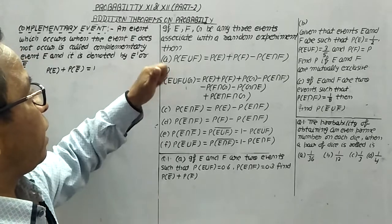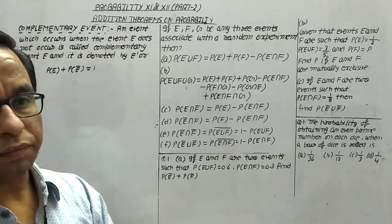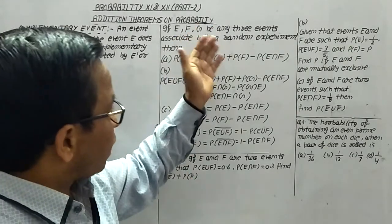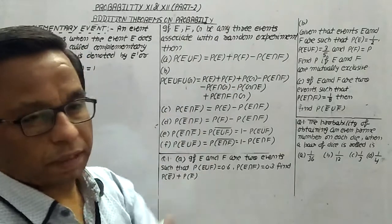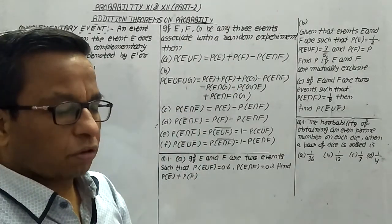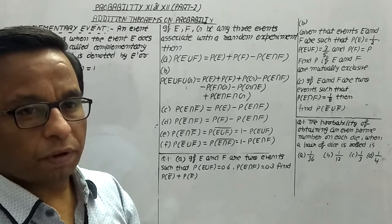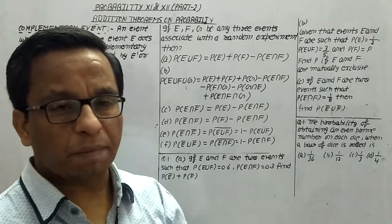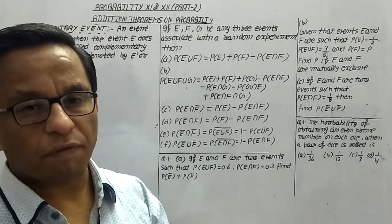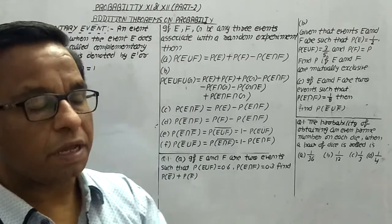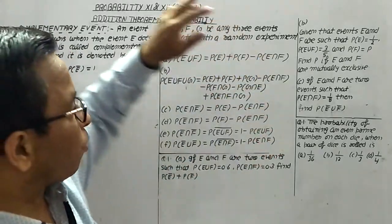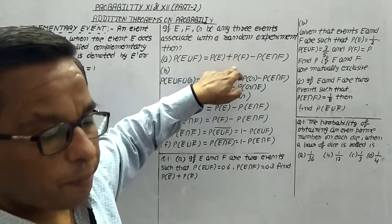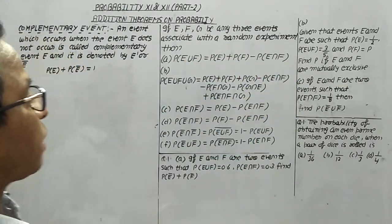Now let's come to the addition theorems on probability. Let us suppose E, F, and G are events associated with a random experiment. On the basis of sets, we proved that the number of elements in A union B equals the number of elements in A plus the number of elements in B minus the number of elements in A intersection B. Similarly, in probability, the probability of E union F equals the probability of E plus the probability of F minus the probability of E intersection F.